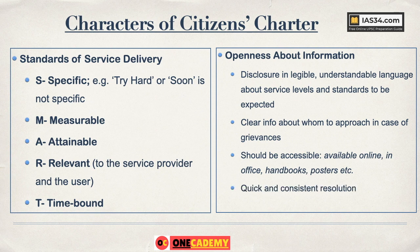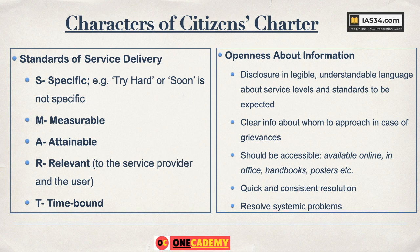There should be quick and consistent resolution. If you are setting a grievance mechanism or service delivery mechanism, it has to be quick and consistent — meaning every person in the same kind of situation should receive the same kind of service. Finally, the charter should resolve systemic problems such as red tapism, delay in file movement between offices, and cases of bribery. These systemic problems are to be resolved through the Citizens Charter.